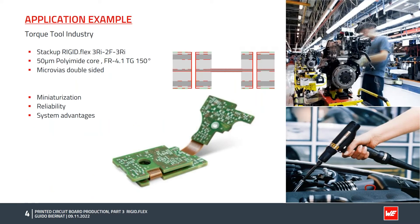Before starting with the technical details, I'd like to present three application examples. All three use a symmetrical layer construction, meaning the flex core is on the inside. Example one shows an industry torque tool spanner. The main electronics were to be used in the handle. The motivation was miniaturization, reliability, and system advantage. The stack-up is called 3RI 2F 3RI — three rigid layers, two flex layers, three rigid layers.